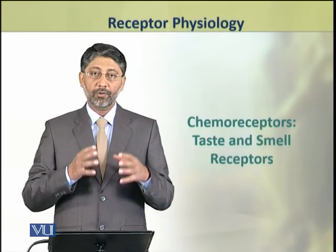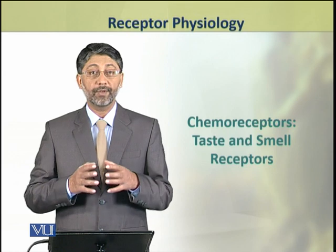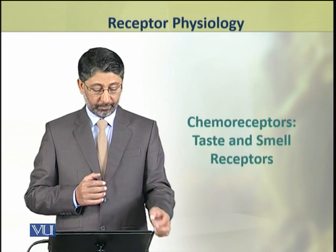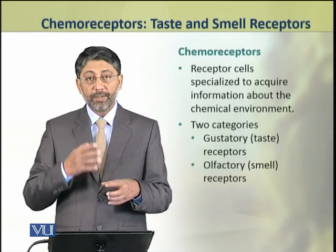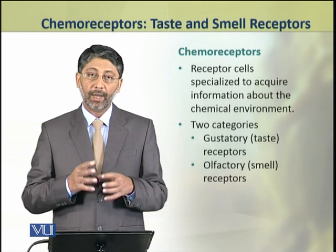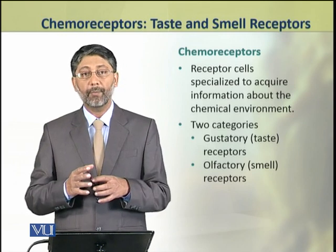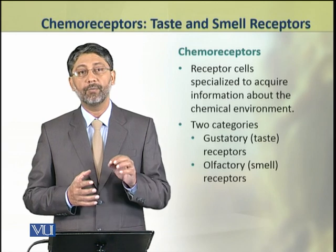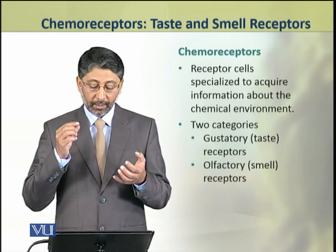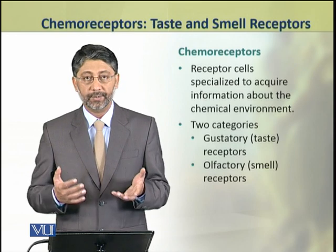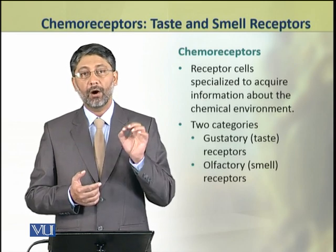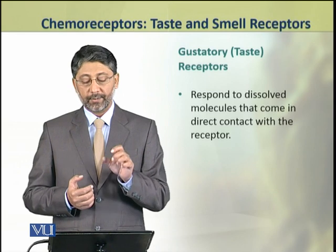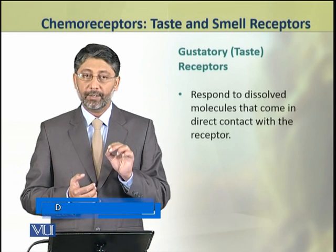In this topic we shall discuss chemoreceptors, which include the receptors for taste and smell. Chemoreceptors are cells which are specialized to acquire information about the chemical environment. There are two categories of chemoreceptors: first are the gustatory receptors, that is taste receptors, and the second category includes the olfactory receptors, that is the smell receptors. First we shall discuss the gustatory or taste receptors in detail.